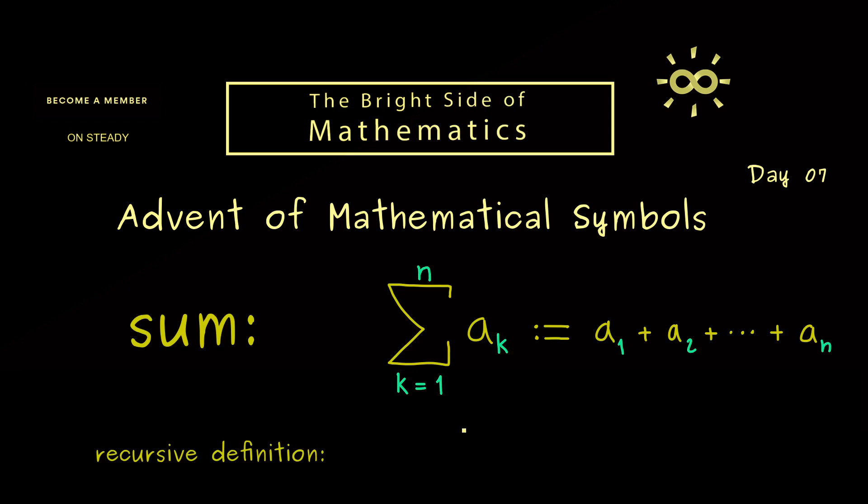However in the formal way you can also write down a recursive definition for the symbol. More concretely this means first I tell you what happens when n here is equal to 0. Then the whole thing from above wouldn't make any sense, because by just increasing the index by 1 we would never reach 0 here.